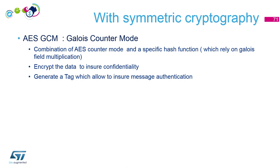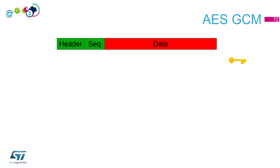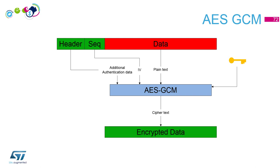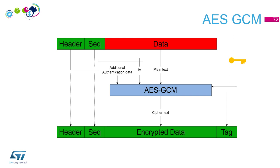Let's see the details of AES-GCM inputs. We have data to send: some data to encrypt and some information we don't need to encrypt, like headers or a sequence number. We also have a symmetric key. The inputs to this algorithm are: additional data (used to generate the tag), a sequence number as the initialization vector for the counter mode, and the plain text to encrypt. The outputs are: encrypted data, a tag (unique — any modification to data or headers changes it), and the unencrypted headers and sequence number.